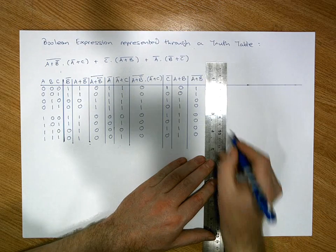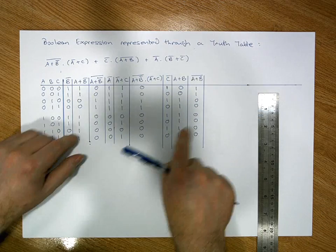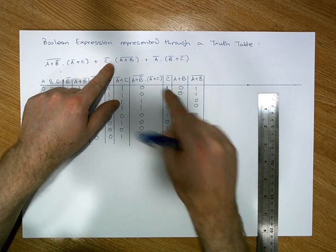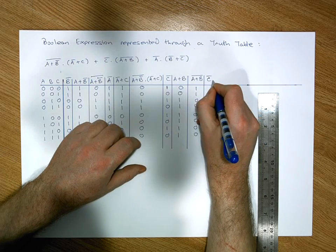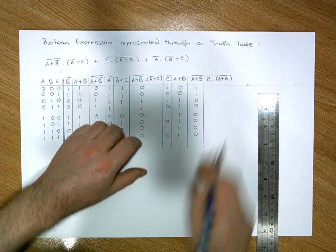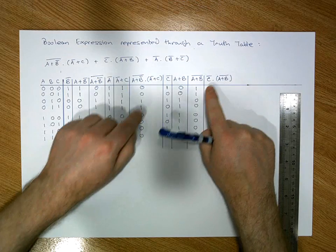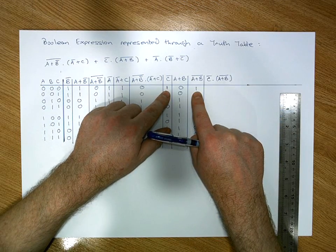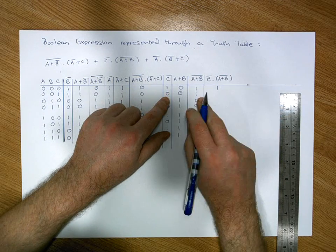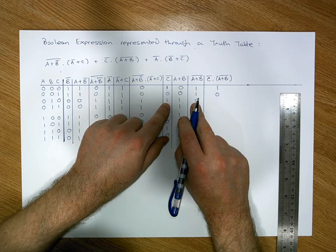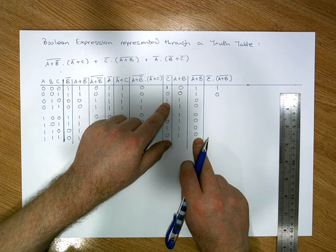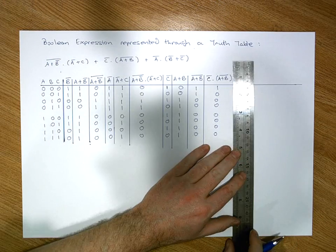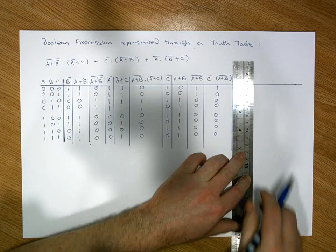Now that we have the C̄ column and the (A OR B)̄ column, we AND them together. An AND gives one when both are simultaneously one; otherwise zero. We have two ones here → 1; not two ones → 0; and we'll never have two ones for the rest of the rows. So the result is 1, 0, 0, 0, 0, 0, 0, 0. That completes the second expression.